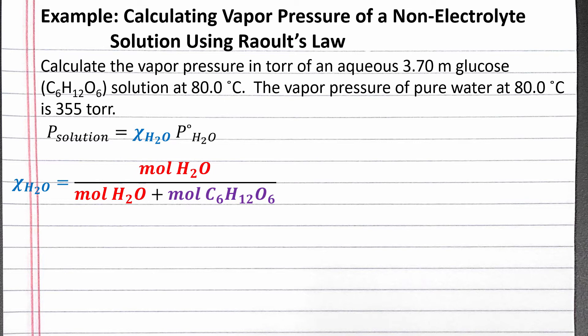We are told the solution is 3.70 molal glucose. To convert molality of glucose to mole fraction of water, we can make one assumption about the amount of solution we're working with. To make the numbers easy to work with, we can make the assumption based on the denominator of the units we're given, which is molality. So let's assume that we have enough solution that we have exactly 1 kg water.